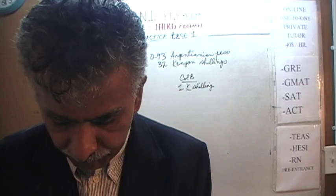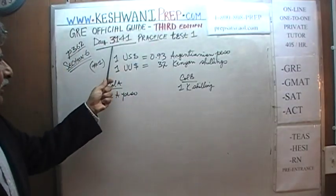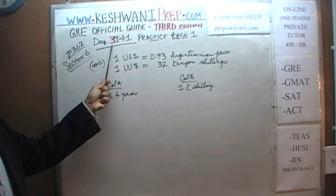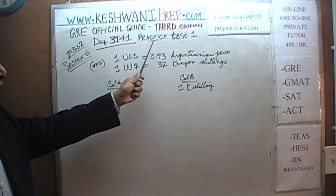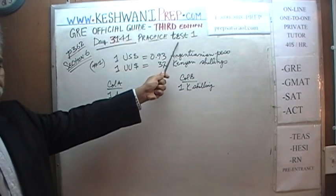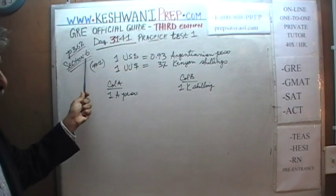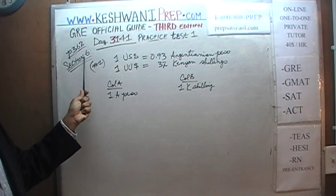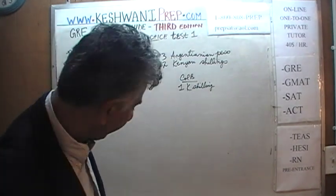Today is our lesson number 141, day 3141. The 3 is to signify the fact that we are in the third edition, day 141. We are in the process of solving the problems for the practice test that you will find at the end of the book on page 362. Yesterday we finished section 5, and today we will begin section number 6.